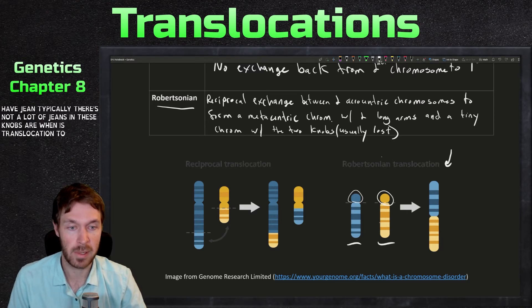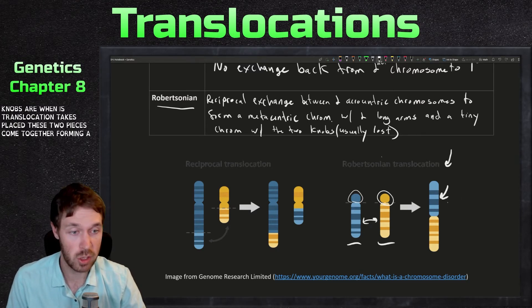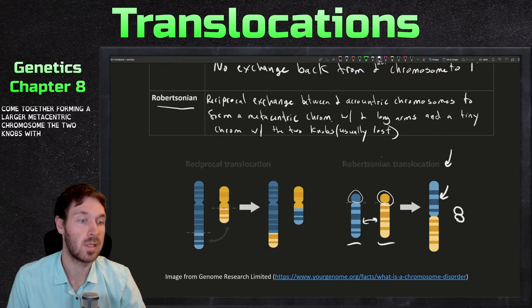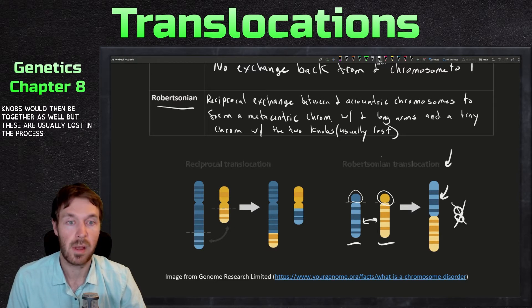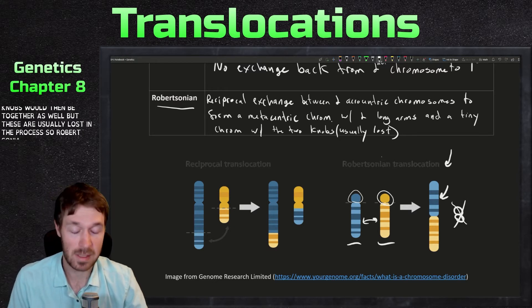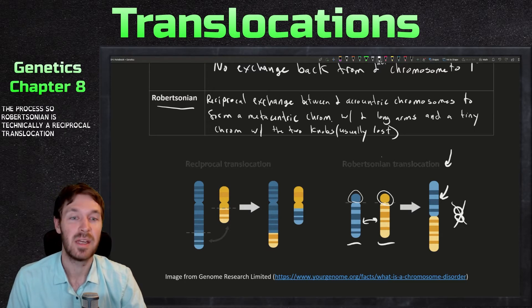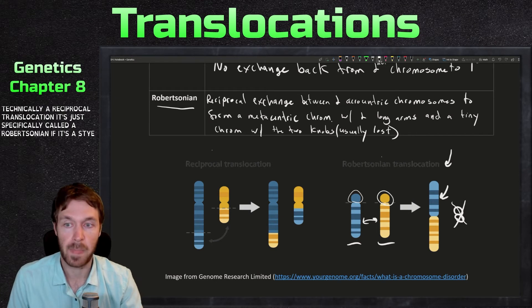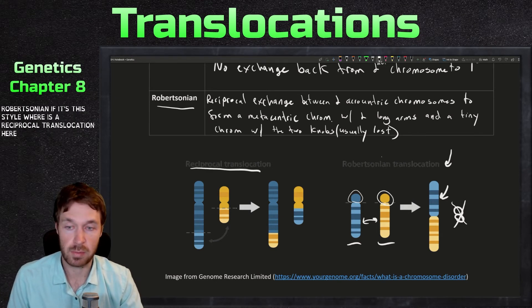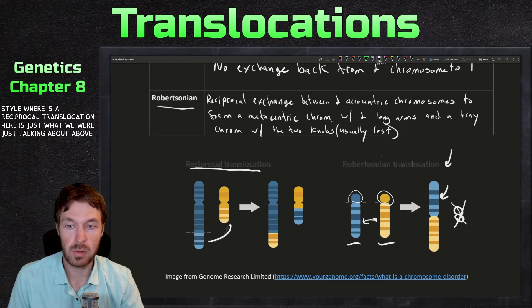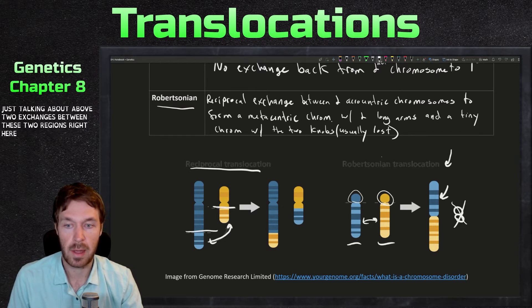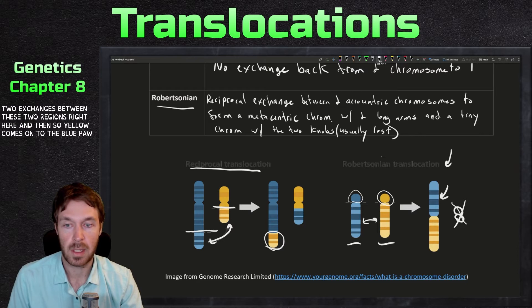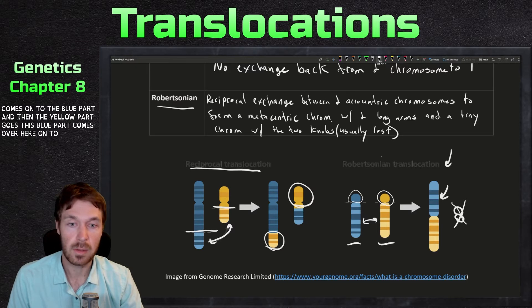So when this translocation takes place, these two pieces come together forming this larger metacentric chromosome. The two knobs would then be together as well, but these are usually lost in the process. So the Robertsonian is technically a reciprocal translocation. It's just specifically called a Robertsonian if it's this style. Whereas a reciprocal translocation here is just what we were just talking about above, two exchanges between these two regions right here. And so yellow comes onto the blue part, and the blue part comes over here on to the yellow.